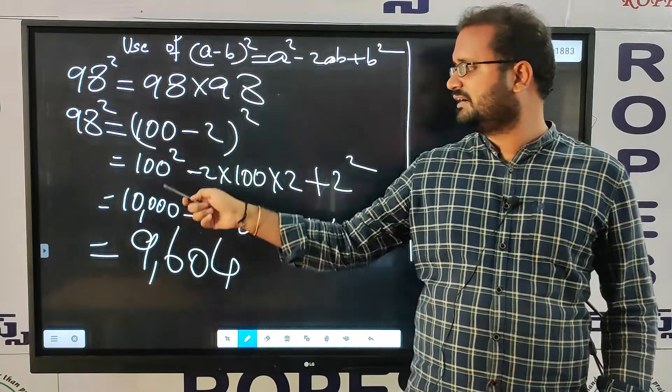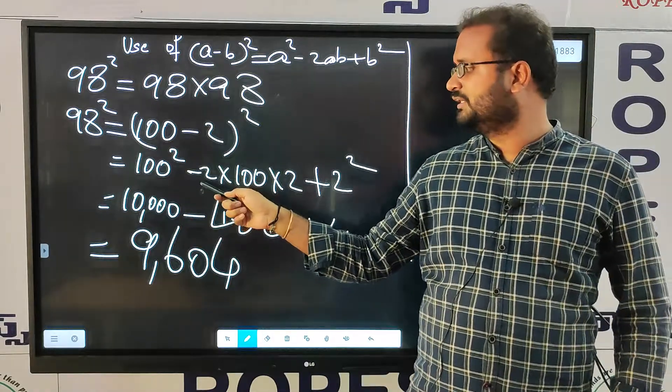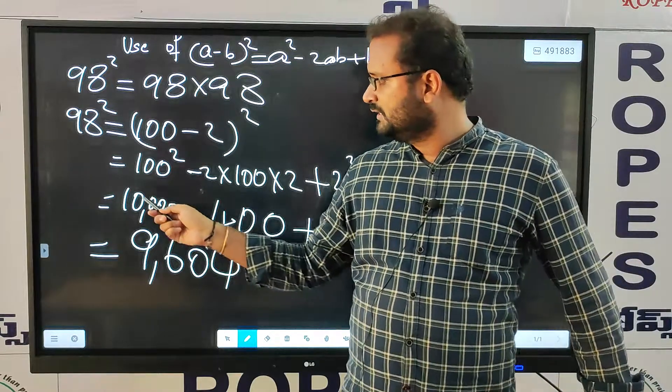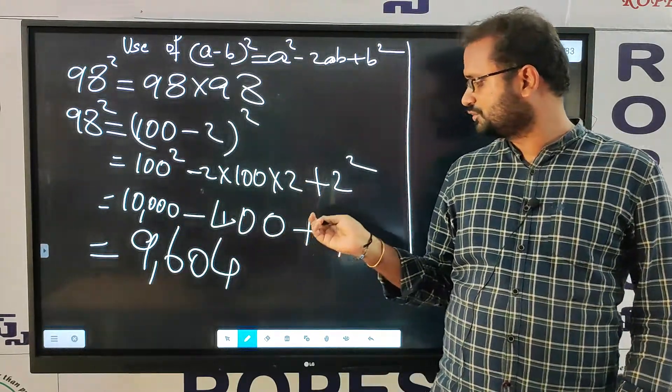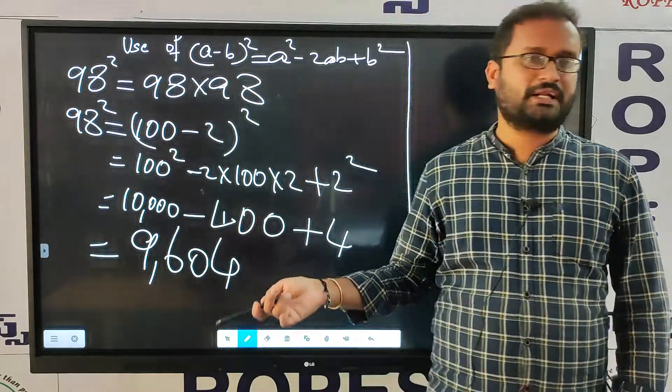So a minus b whole square, that is a square, 100 square minus 2ab, 2 into 100 into 2 plus b square, that is 2 square. So 100 square value is 10,000. 2 into 100 into 2, that is 400 plus 2 square value 4.